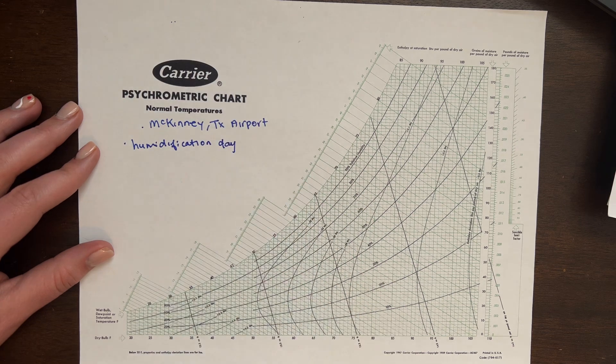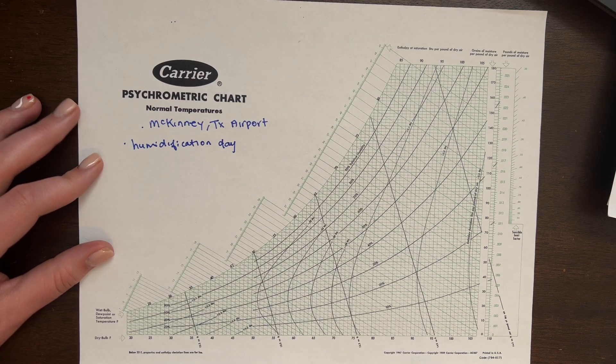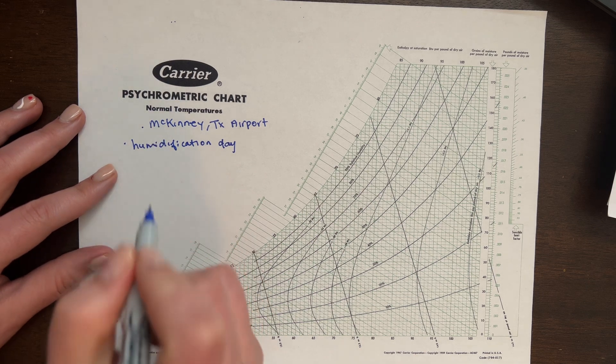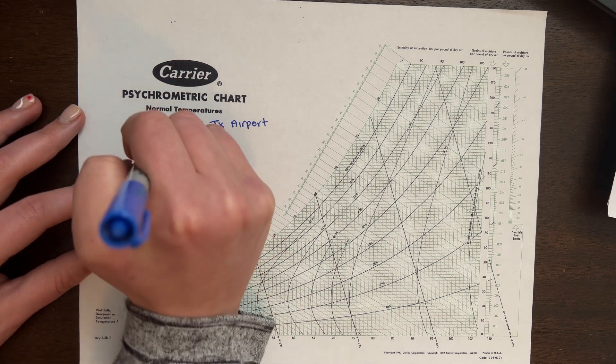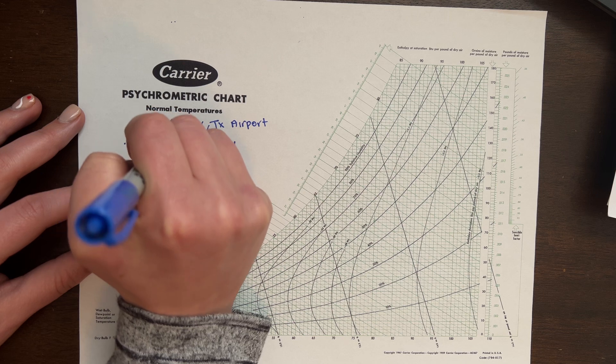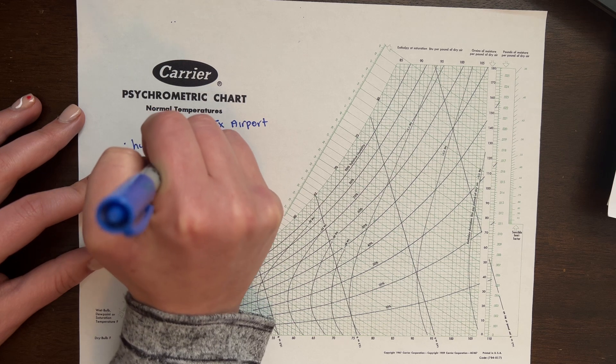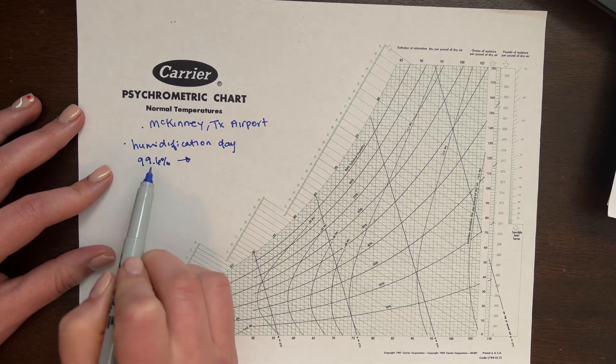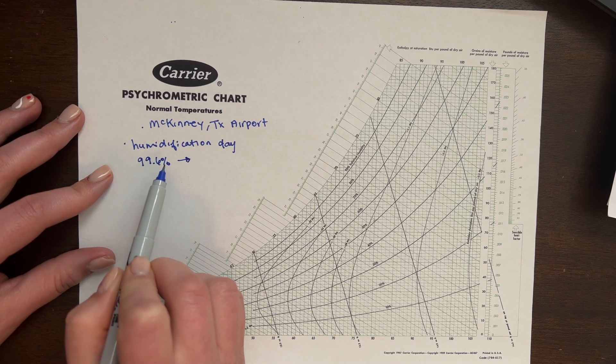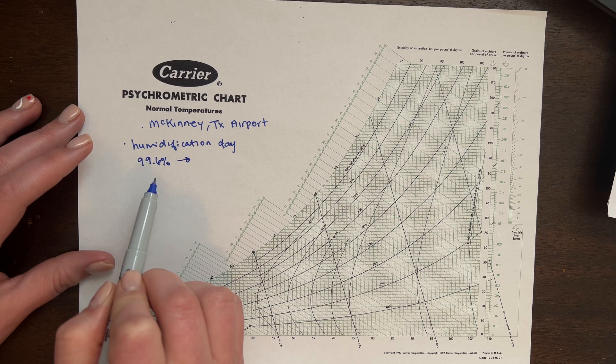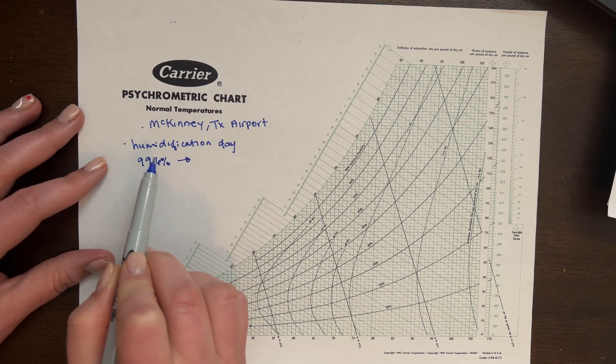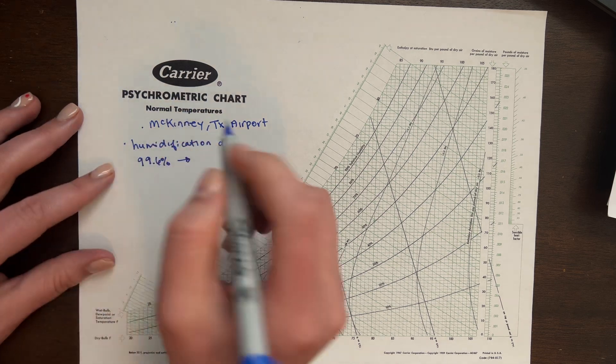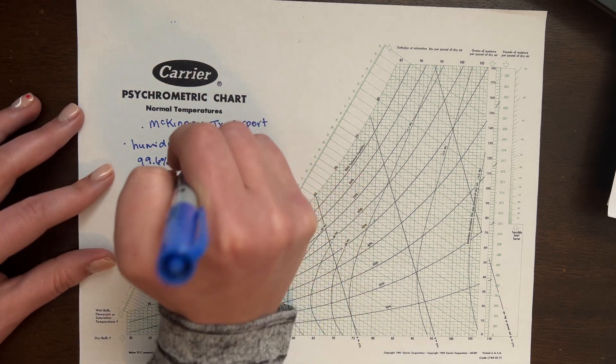And I'll use this information in another example to size a humidifier. Okay, so we have a humidification day, and I'm going to use the 99.6% day. That just means how often or how likely are you going to experience this day. It's going to be like 0.4% of the entire year you're going to experience this humidification instance.